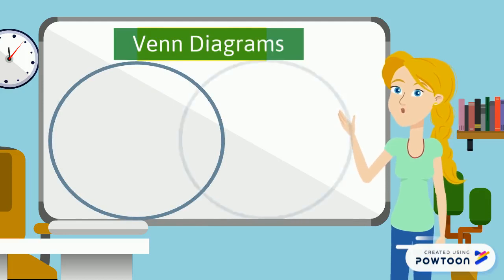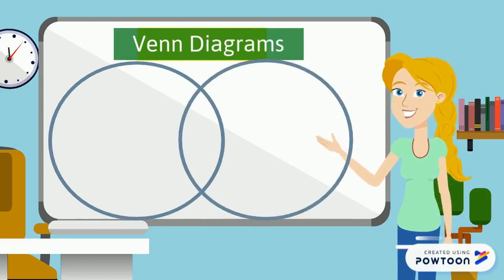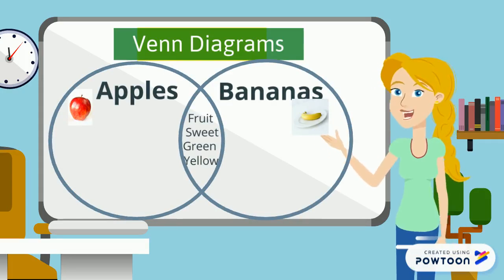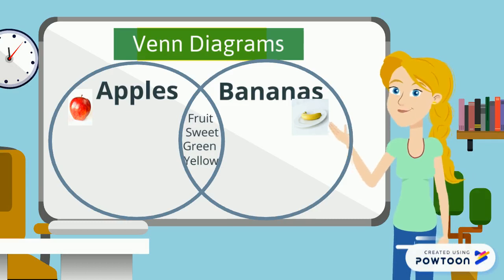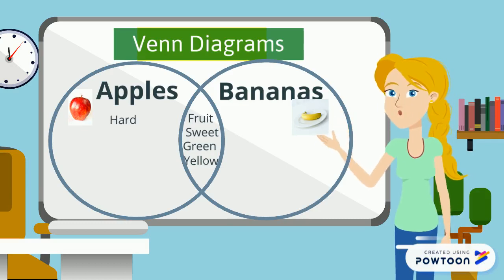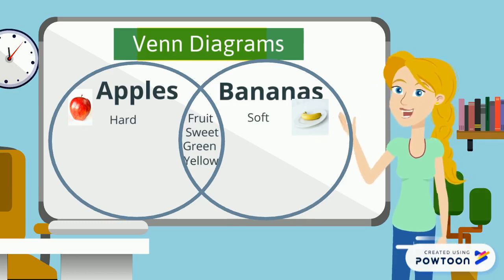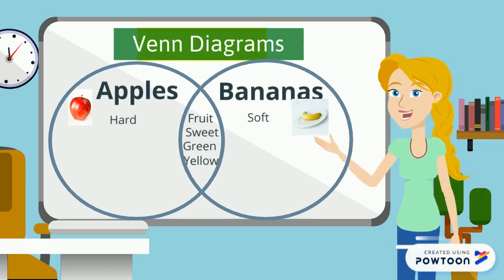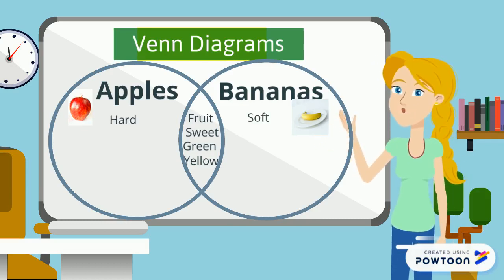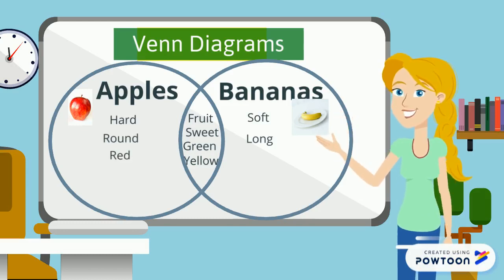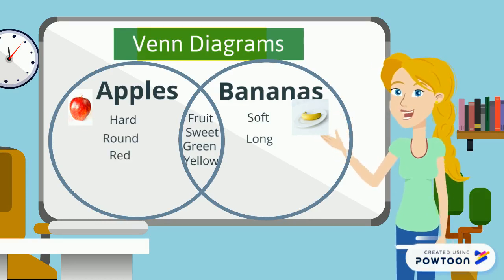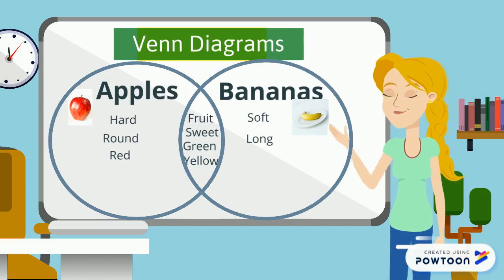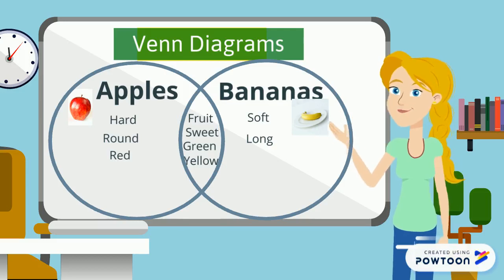Now that we've filled out the middle part of our circles, let's think about the things that apples and bananas don't have in common. For example, apples are hard, bananas are soft. Apples are round, bananas are long. Apples are red, but they can also be green or yellow like a banana, so that would go in the middle part.